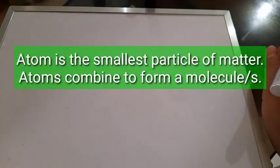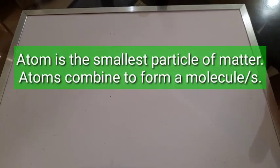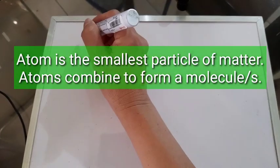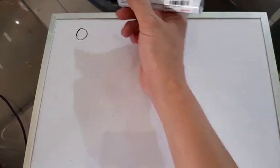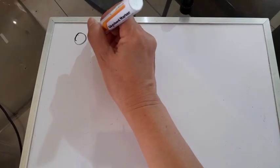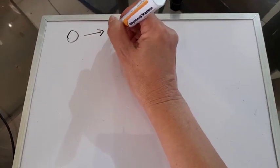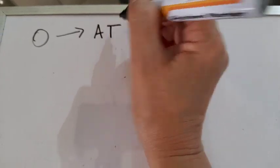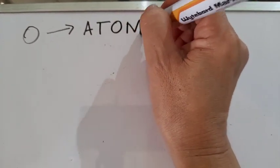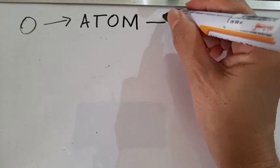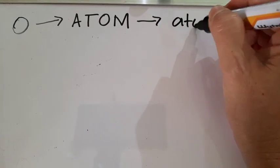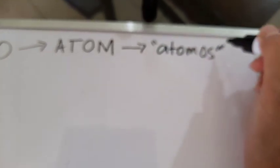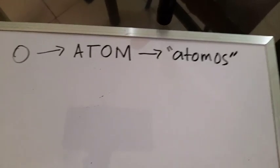We can explain the particle nature of matter using the particle model. The smallest particle of matter is what we call an atom. The word 'atom' came from the Greek word 'atomous,' which means very small and indivisible.